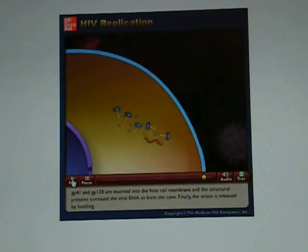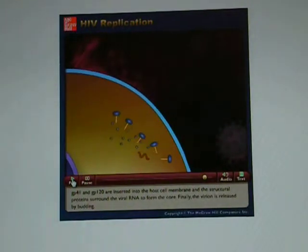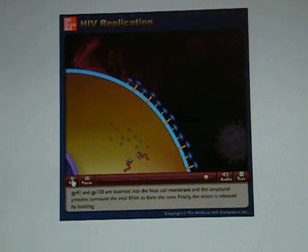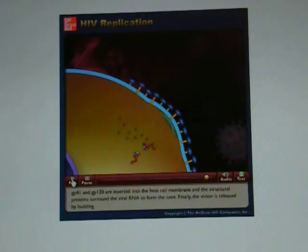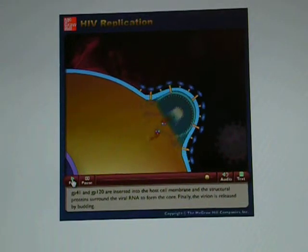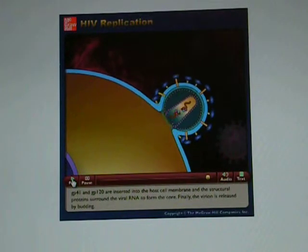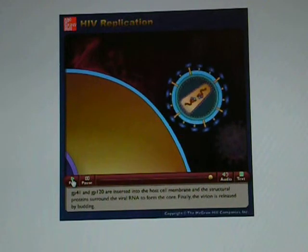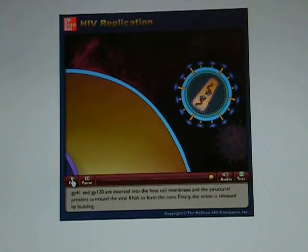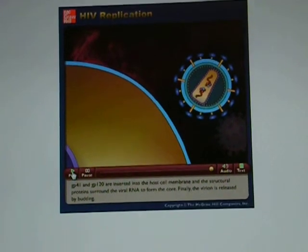GP41 and GP120 are inserted into the host cell membrane, and the structural proteins surround the viral RNA to form the core. Finally, the virion is released by budding.